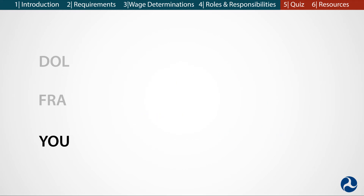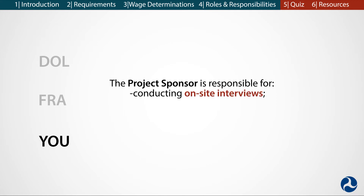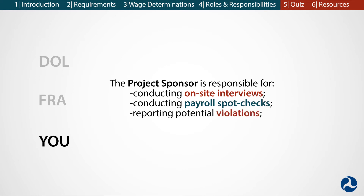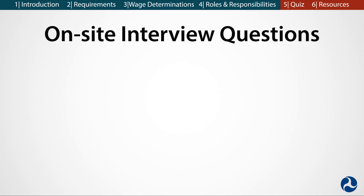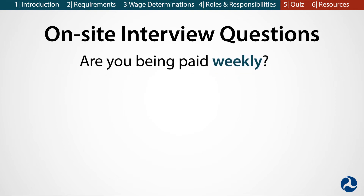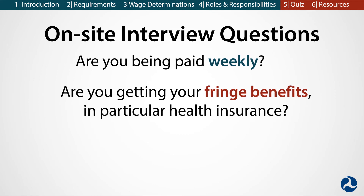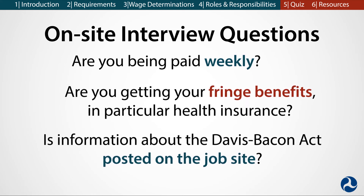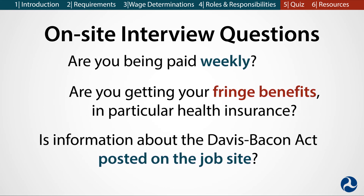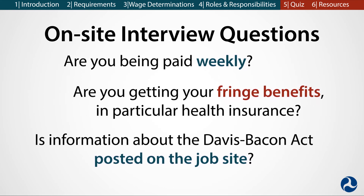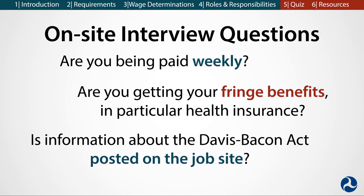The project sponsor plays a big role in following the requirements of the DBA. Project sponsors are responsible for conducting on-site interviews with laborers and mechanics, conducting payroll spot checks and reviewing related records, reporting potential violations, and maintaining full documentation. The project sponsor is ultimately responsible for these activities but may delegate them to its agent. The on-site interviews with workers that the project sponsor conducts should include questions like: Are you being paid weekly? Are you getting your fringe benefits, in particular health insurance? Is information about the Davis-Bacon Act posted on the job site? The project sponsor should document the results of these interviews.